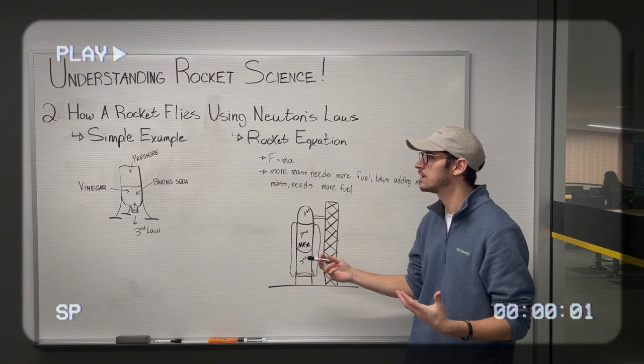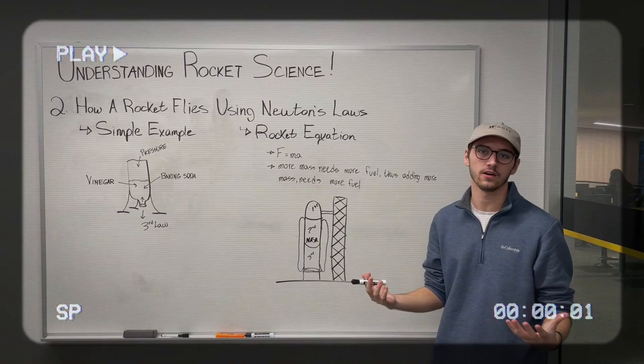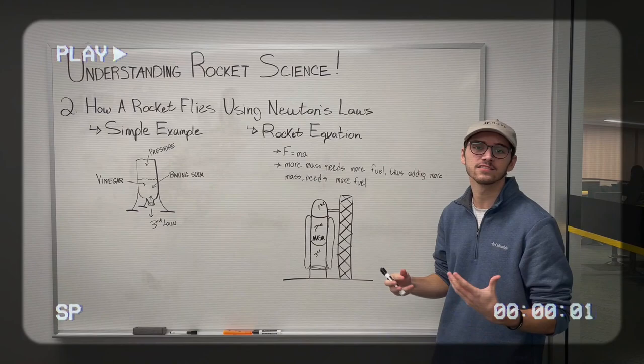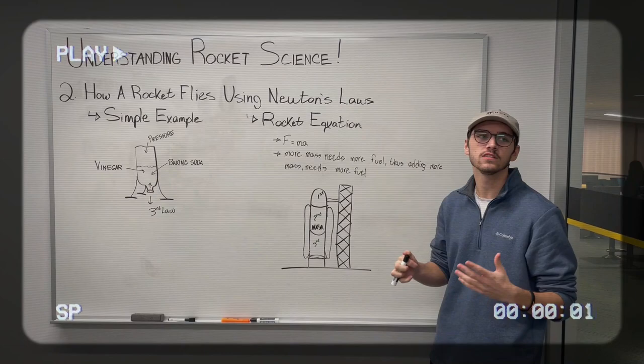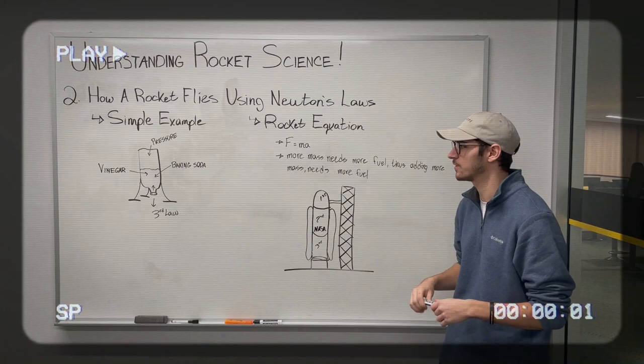So after looking at the first simple example of how a bottle rocket launches using pressure and the chemical reaction between baking soda and vinegar, we can look at how an actual rocket launches, which uses the rocket equation. Now, the rocket equation is very complicated, and it's something that scientists have dealt with over many years. And it basically uses Newton's second law of motion, F equals ma, which is force equals mass times acceleration.